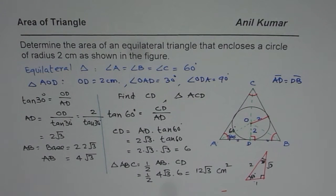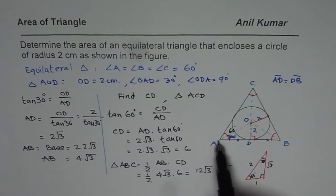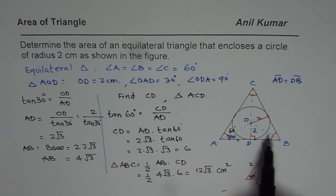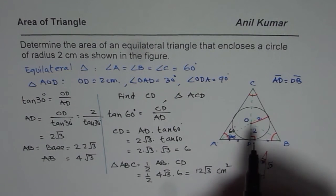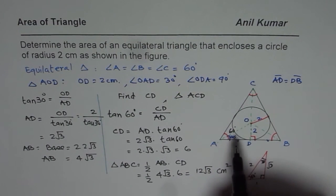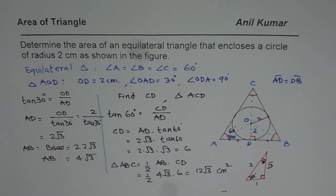To summarize: to construct an incircle, we find the intersection point of the bisectors of the three angles — that becomes the centre of the incircle. Since the radius is 2 and this is an equilateral triangle, all angles are 60°, so half-angles are 30°. We applied the TAN ratio twice to get the half-base and the height, then applied the area formula to get 12√3 cm². I hope that helps — thank you and all the best.